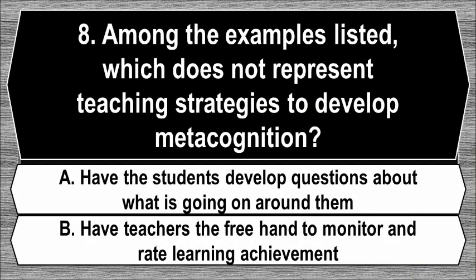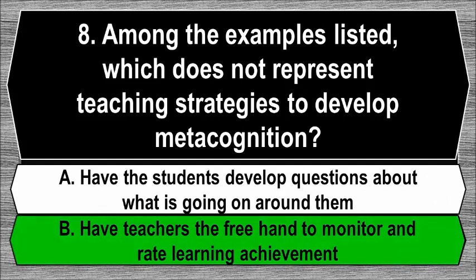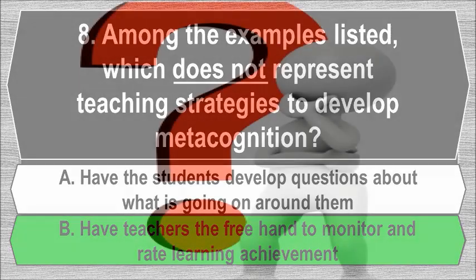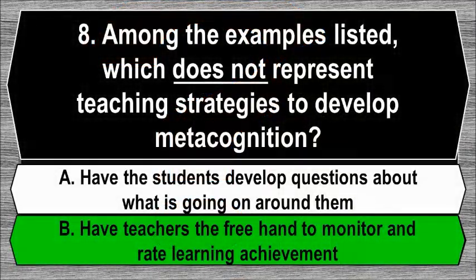Question 8. Among the examples listed, which does not represent teaching strategies to develop metacognition? A. Have students develop questions about what is going on around them. B. Have teachers the free hand to monitor and rate learning achievement. The correct answer is B. This statement does not represent teaching strategies to develop metacognition because metacognitive strategies refer to methods used to help students understand the way they learn, which relates to the first statement.